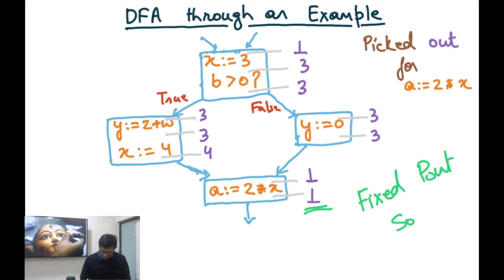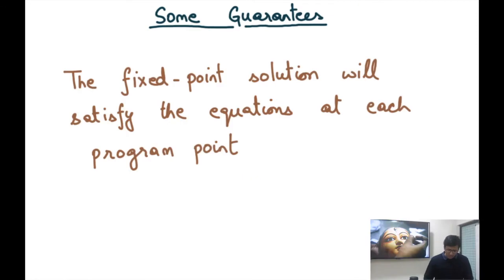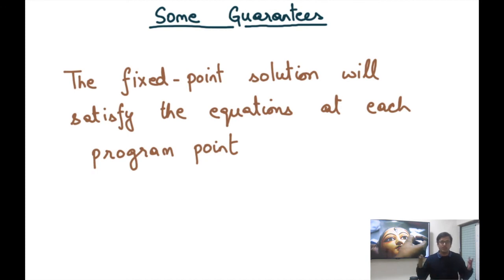What we did was a fixed-point iteration — this algorithm is a fixed-point iteration. Here are some guarantees: the fixed-point solution will satisfy the equations at each program point, just by construction of the algorithm. We keep iterating until all equations are satisfied, so when the fixed point is reached, all equations are definitely satisfied.